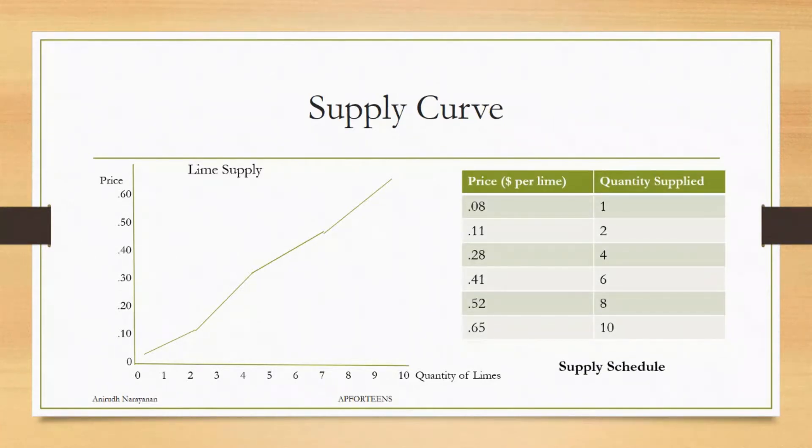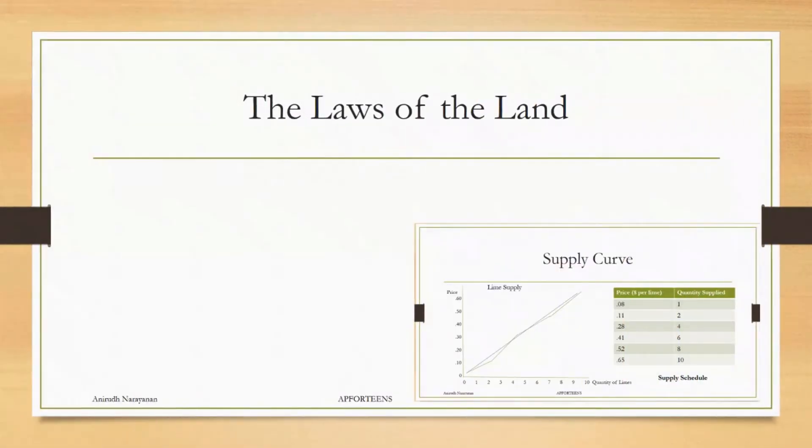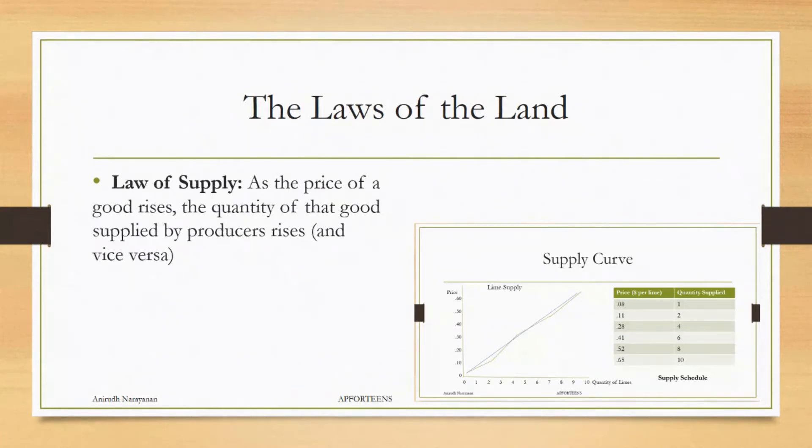Now, as the price of a certain lime increases, the quantity of supply will increase as well. Now, the laws of the land. The law of supply states that as the price of a good rises, the quantity of that good supplied by producers rises as well, and vice versa. You can see there with the supply chart.